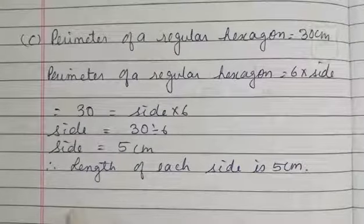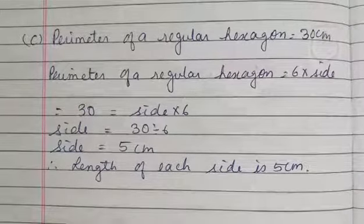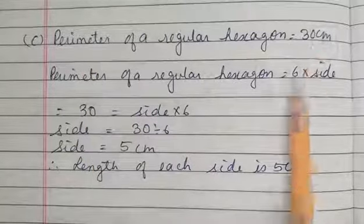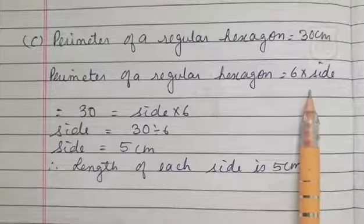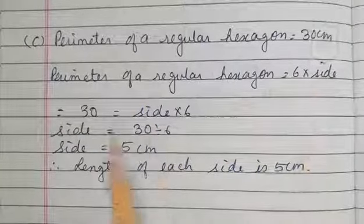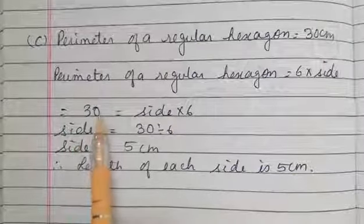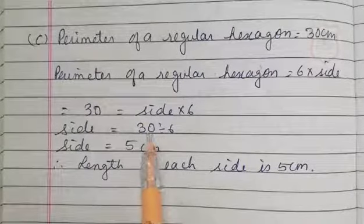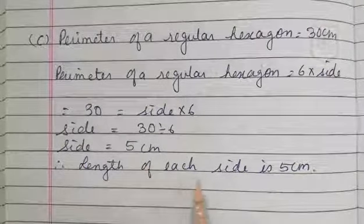Solution for part C of question 11. We have to find the length of each side if the string is used in the form of a hexagon. Perimeter of a regular hexagon = 30 centimeters. The formula is 6 × side, so 30 = 6 × side. To find the side, we divide 30 by 6. Side = 30 ÷ 6 = 5. Therefore, the length of each side is 5 centimeters.